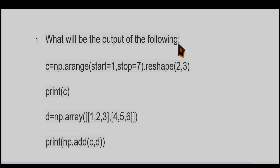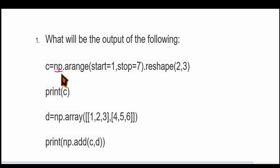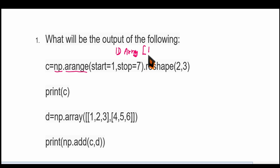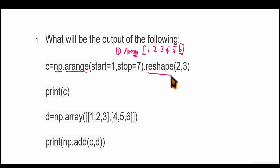What will be the output of the following? NP indicates that the NumPy package should be imported before executing this instruction. Arange is a function that will create a 1D array. The elements will be starting from 1, 2, 3, 4, 5, 6. 7 is not included. Now, this array should be reshaped as a 2 by 3 array, meaning there should be 2 rows and 3 columns.